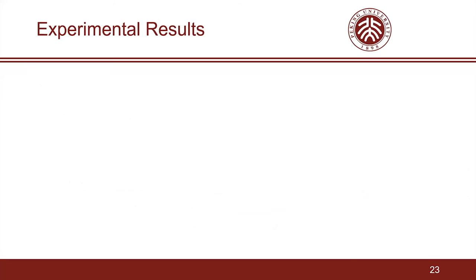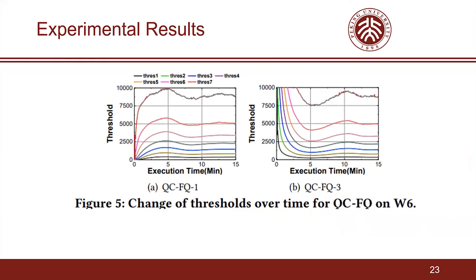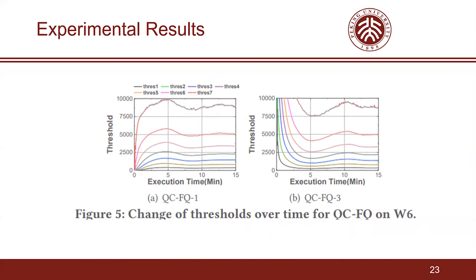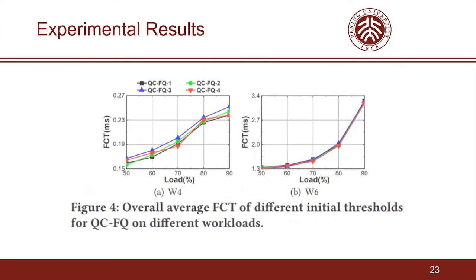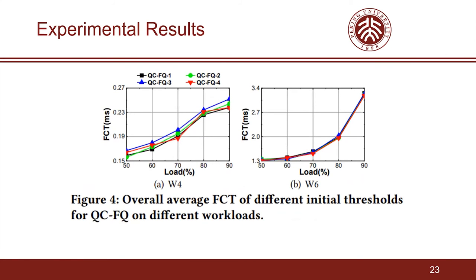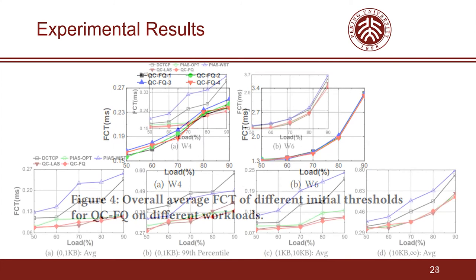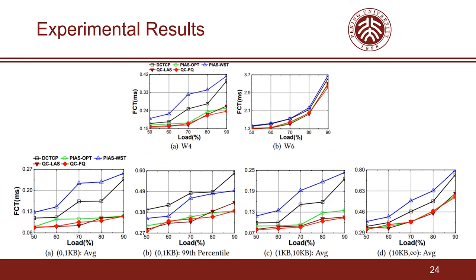Here we present the experimental results of fair queuing on our testbed. First, we find that no matter what the initial thresholds are, the thresholds can quickly converge to similar values. Second, we find that the cluster sizes can quickly converge to the same. Third, we find that the initial thresholds have negligible impact on FCT under various traffic patterns and different traffic loads. We also find that Queue Cluster achieves comparable performance to Peers, which requires measuring traffic patterns in advance to configure its thresholds.